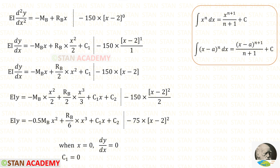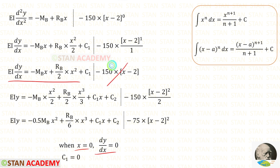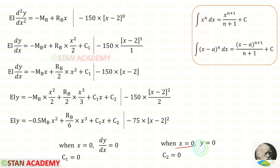At point B there is a fixed support, so there will be no slope. When X is 0, dy/dx equals 0. Applying this boundary condition and not considering the Macaulay bracket term, we get C1 equals 0. Also, at the fixed end there is no deflection, so when X is 0, y equals 0. Applying this to the deflection equation and ignoring the bracket term, we get C2 equals 0.